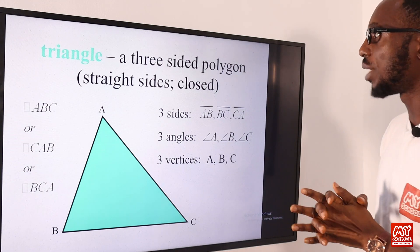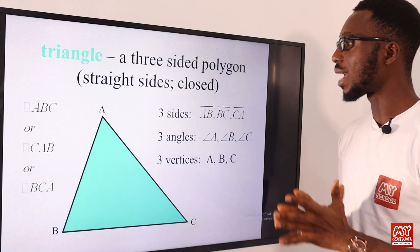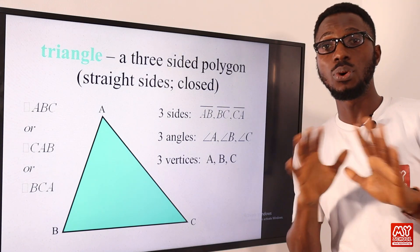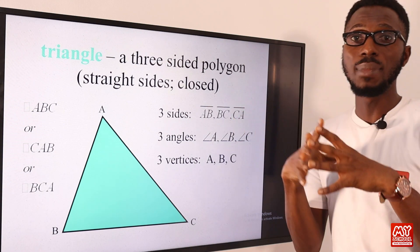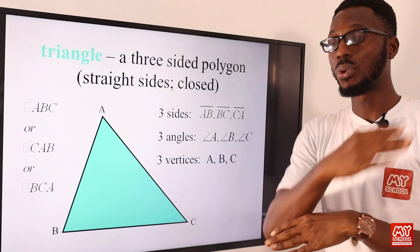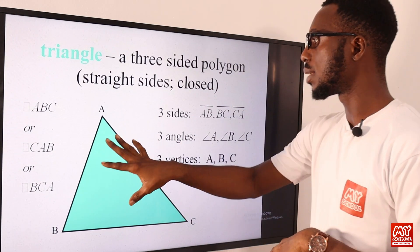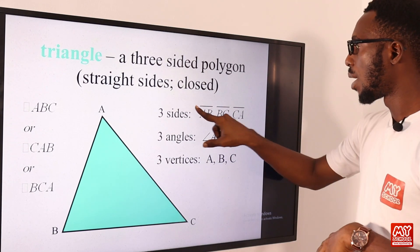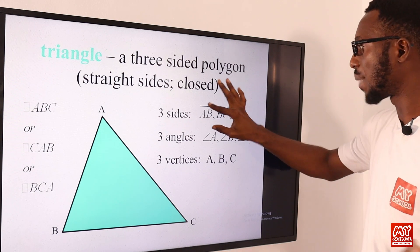A three-sided polygon has straight sides and they are closed. That is one thing that actually distinguishes a polygon — the set of line segments are closed and they do not cut across each other. So you can see we have three sides; this actually represents a line. You can call it a line, line segment, or segment.